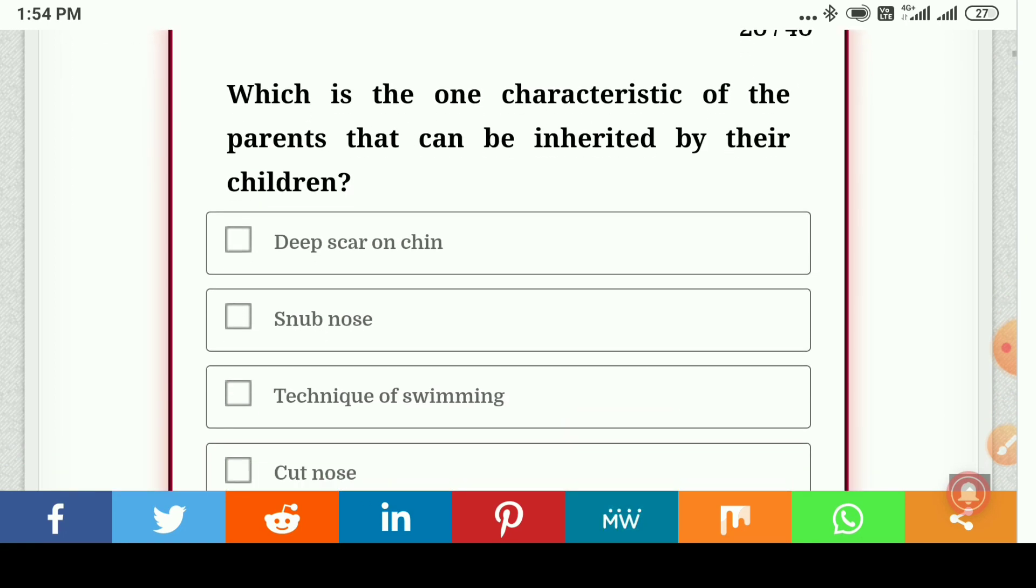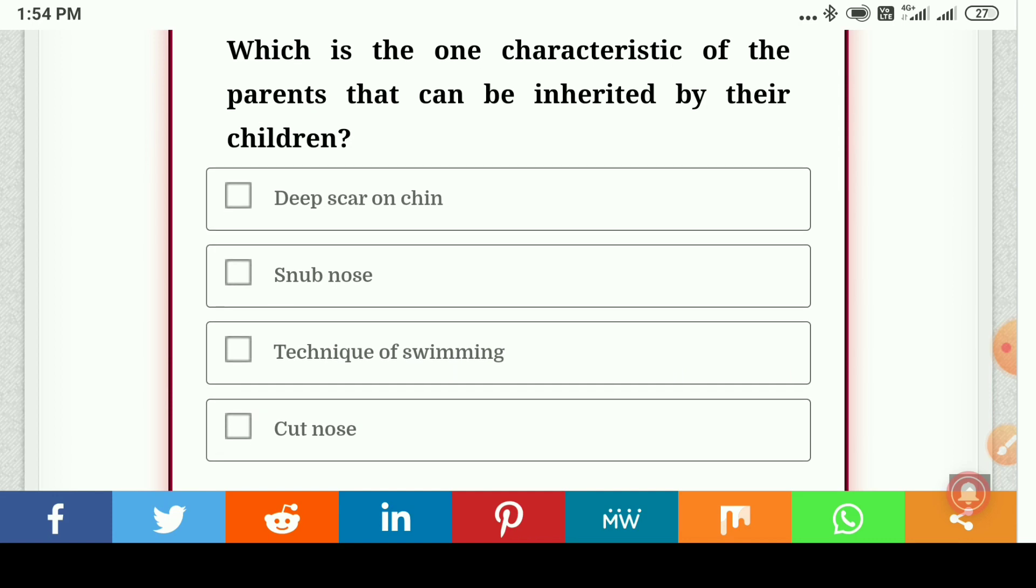Which is the characteristic of the parents that can be inherited by their children: deep scar on chin, snub nose, technique of swimming, or cut nose? So here the answer is snub nose.